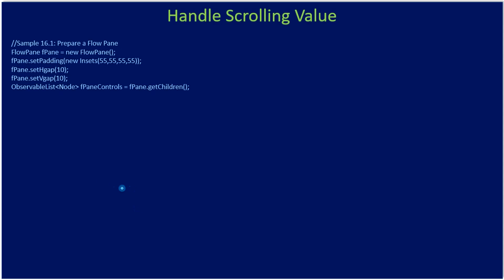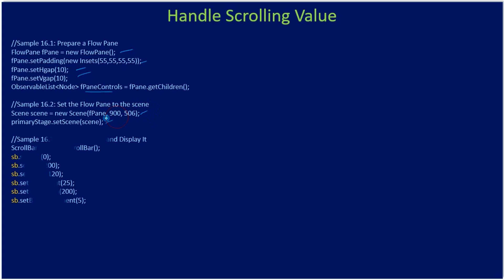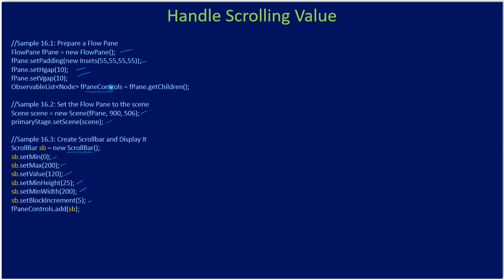Now let's look at the code. Here we created a FlowPane, set the gap, retrieved the child controls, and set the FlowPane to the scene. Then we create the scroll bar and set all its properties: minimum is 0, the leftmost value is 0, the rightmost value is 200, so maximum value is 200. We set the scroll thumb position at 120, request a minimum height and width in pixels, and then set a block increment of 5. After setting up the scroll bar, we add it to our FlowPane control.